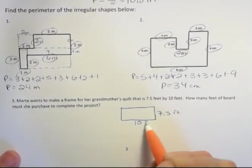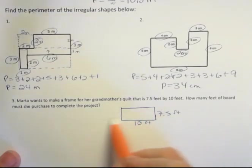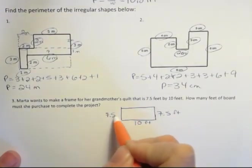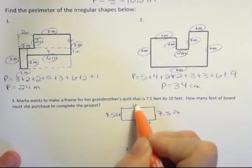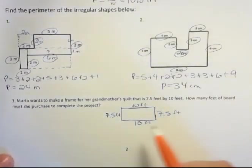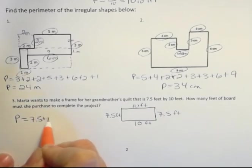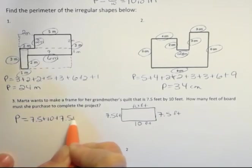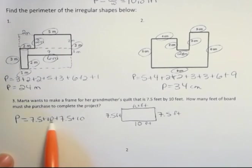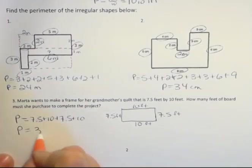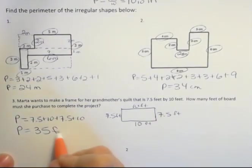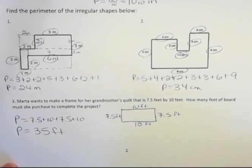Notice that I only have two dimensions like we had up in our first problem in the video, but that still means if I want to build this, I can't just build two sides. I need all four sides to build a frame. And once I do that, I can add all those up and have 7.5 + 10 + 7.5 + 10, 15, 25, 35 feet that she would need to make that project.